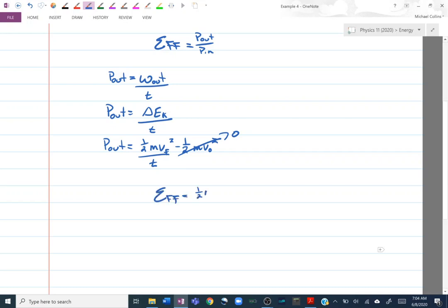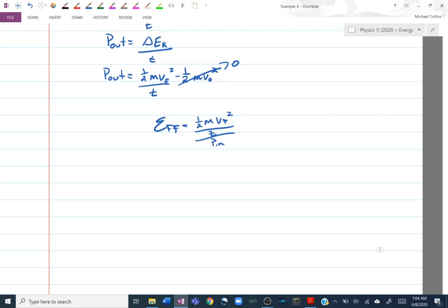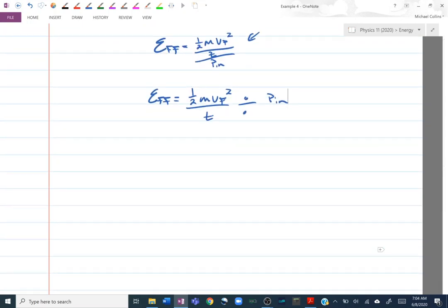My efficiency is equal to a half mv squared over t over power in. If you wanted to do this in many steps, you could. 100%, you could take the power, the numbers you have for power out, calculate what the power out is, divided by the power in, and that'd be fine. But you know me, I like to do my algebra, and I think it's great practice to do so. And here we have a gross compound fraction, and there's no better spot to practice your algebra. This is the same as a half mv f squared over t divided by power in. If you remember your fraction laws, this is a half mv f squared over t times 1 over p in. And this half is also bugging me. I'm going to put that on the bottom. That's a 2.